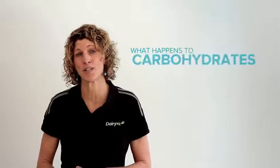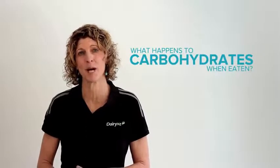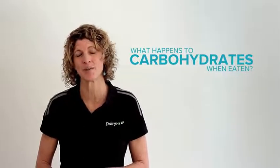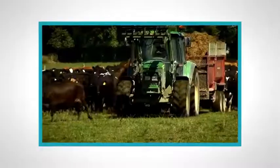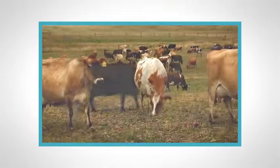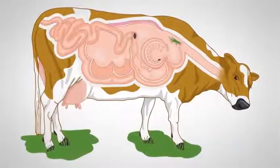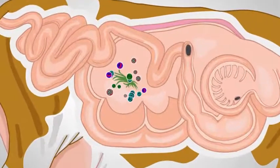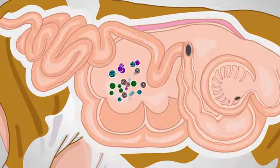So, let's have a look in more detail as to what happens to these carbohydrates when they're eaten by the cow. When a cow eats a food, be it a forage or a concentrate, the carbohydrates in this food are broken down or fermented in the rumen by microbes to form simple sugars.